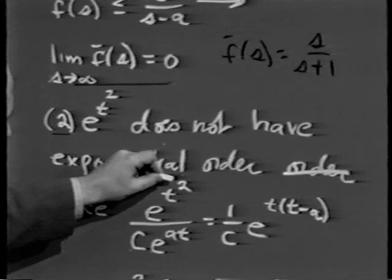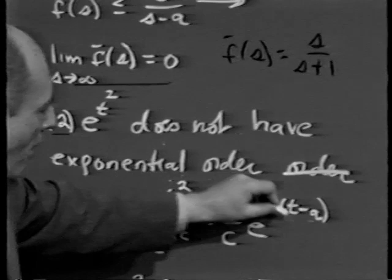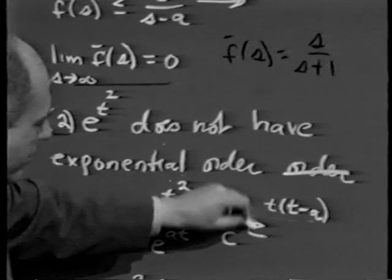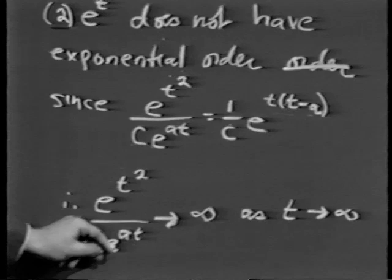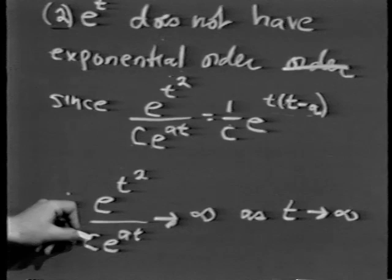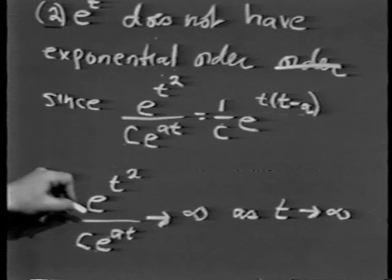Assuming that f and g have Laplace transforms, meaning those improper integrals from 0 to infinity converge, we have: L of f plus g equals L of f plus L of g, and L of c times f equals c times L of f. These are the linearity properties. How does that help us, and why does it suggest that the Laplace transform will be useful in solving linear differential equations with constant coefficients?